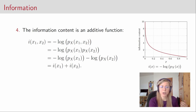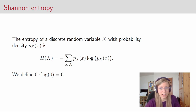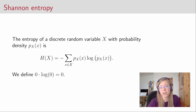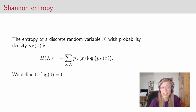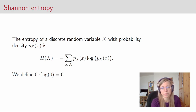But this is only the information content of a single realization. What we would also be interested in is the information content of the whole random variable. This is defined as the entropy of a random variable, usually called Shannon entropy, after Shannon who introduced it. The entropy of a discrete random variable X with probability distribution p_X(x) is given by minus the sum over all realizations of the logarithm of the probability times the probability of the realization, summed over all possible realizations within the alphabet of the random variable.